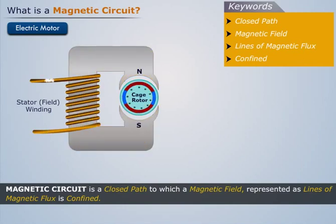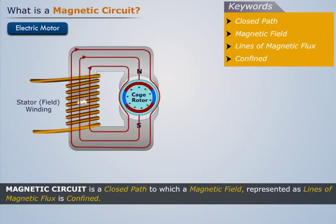Each magnetic field line makes a complete unbroken loop and all the lines together constitute the total flux which in turn forms a magnetic circuit.